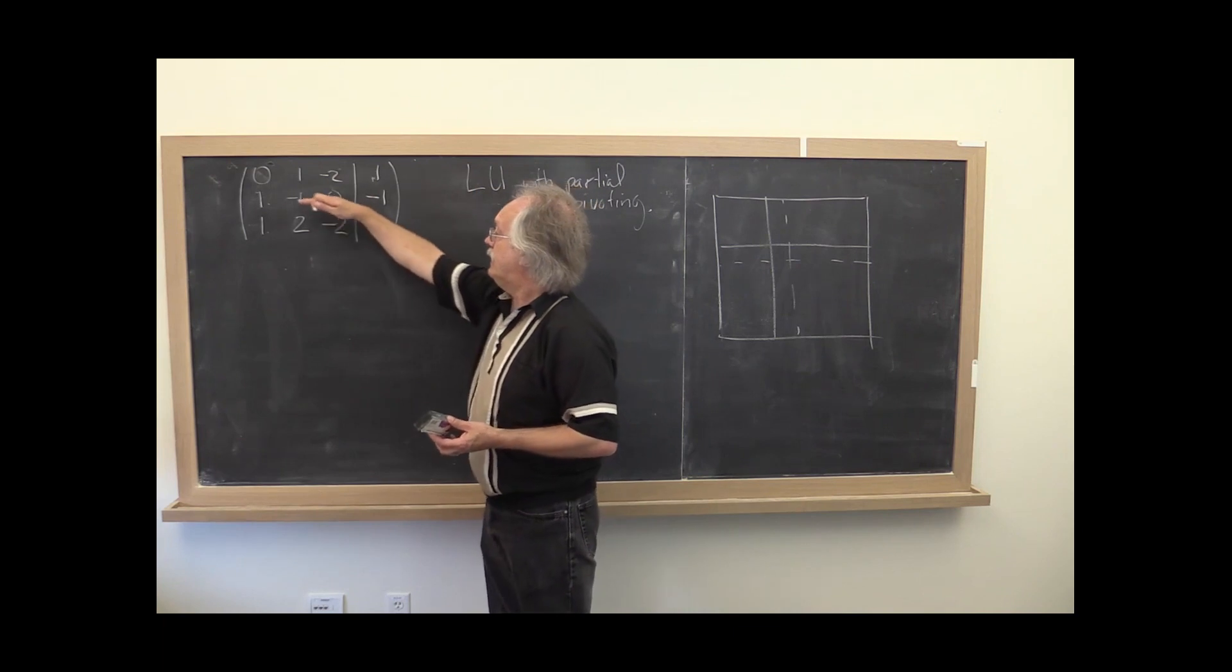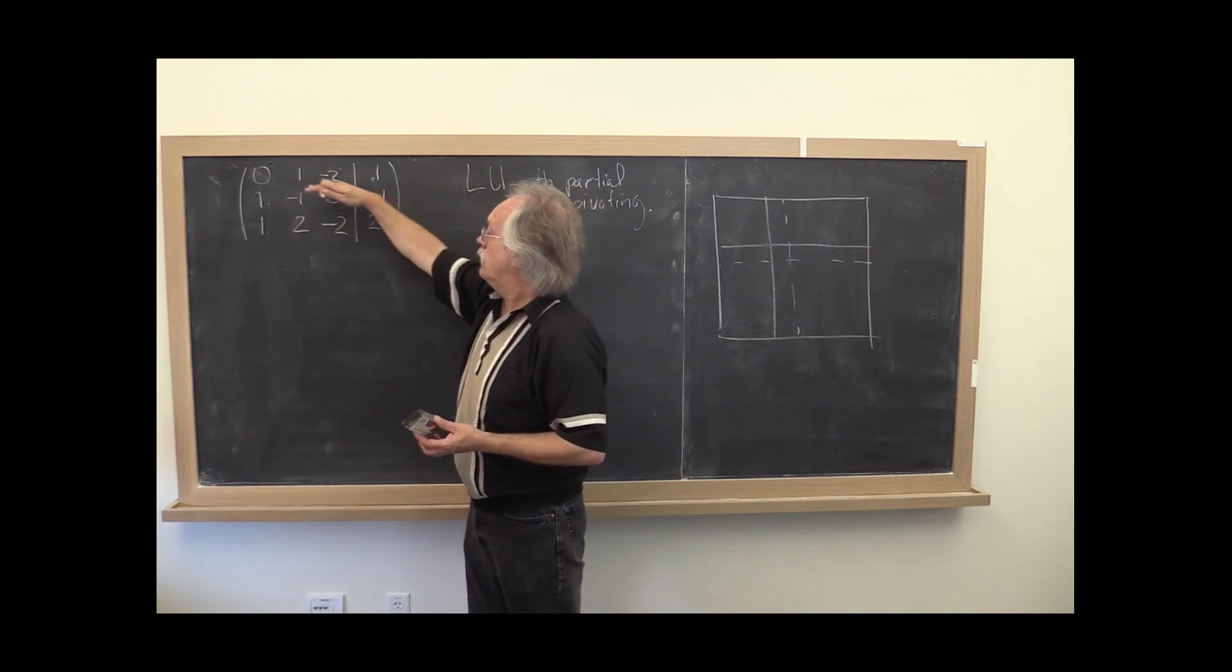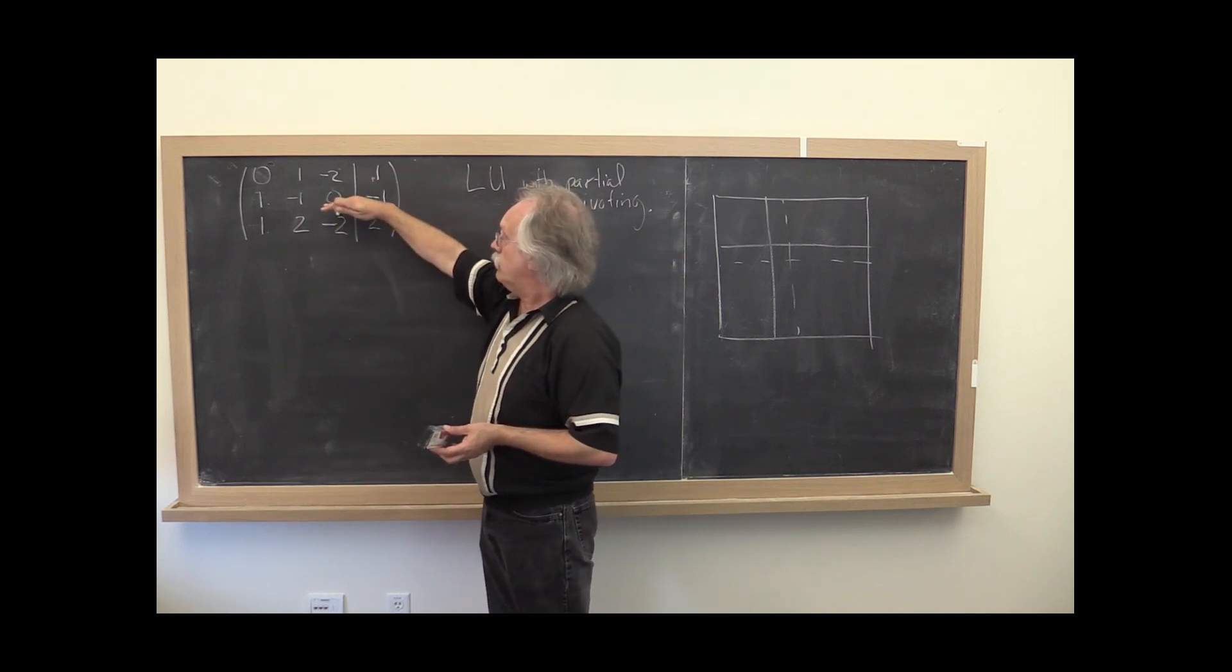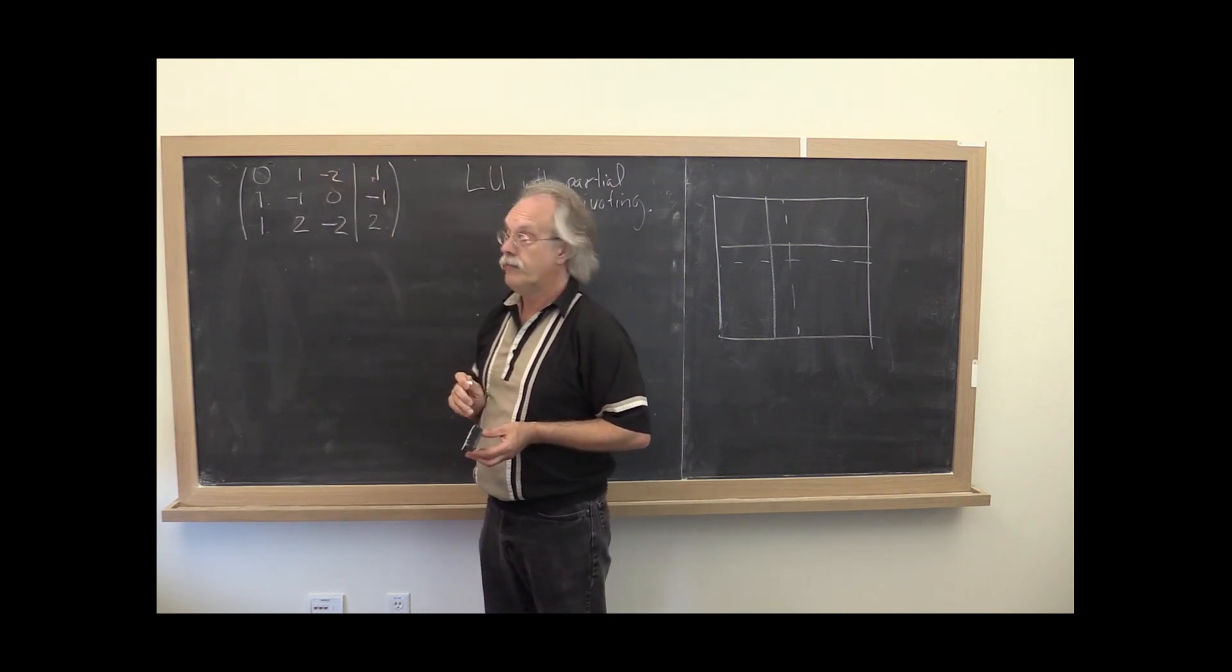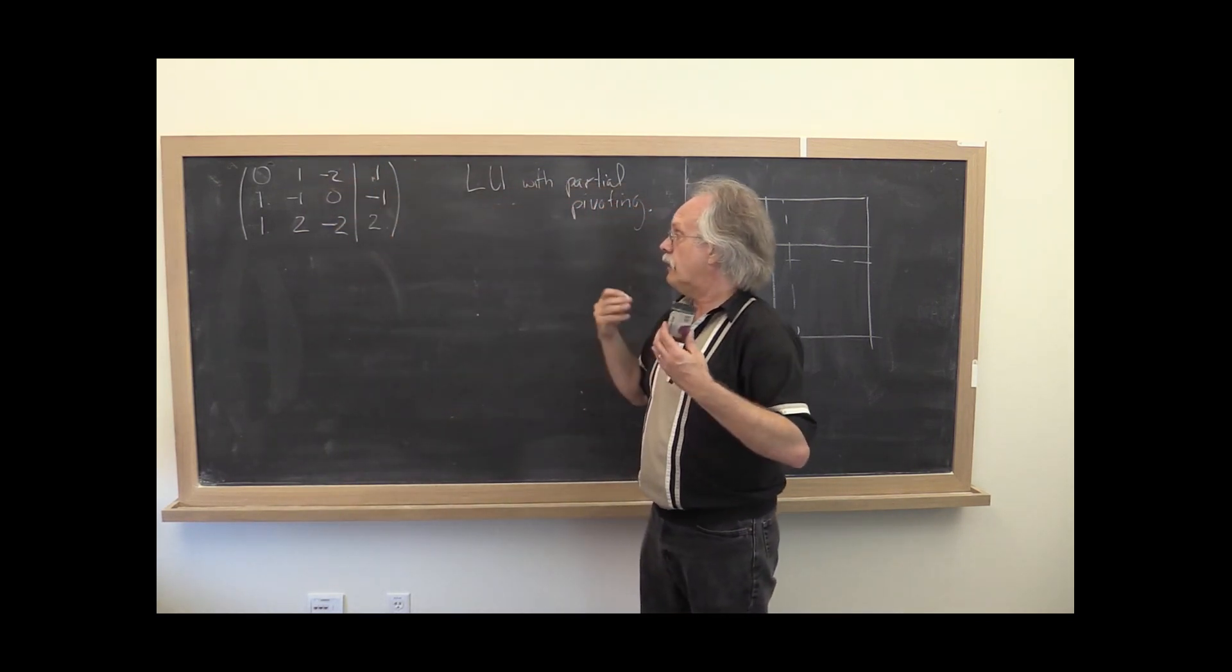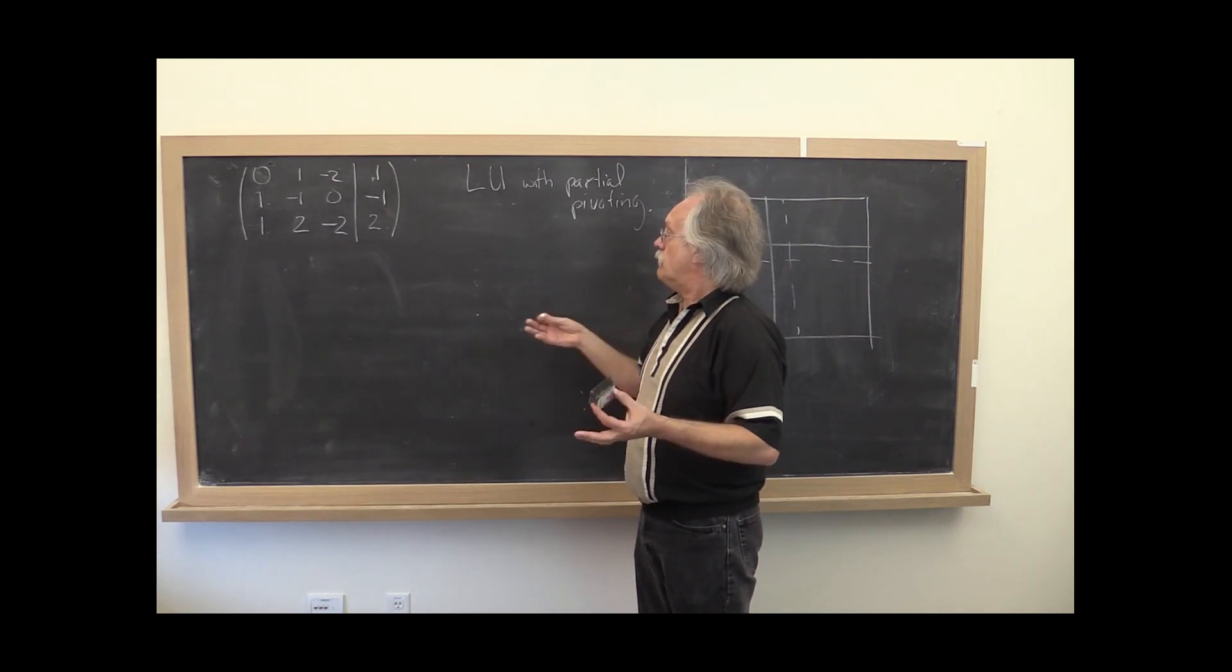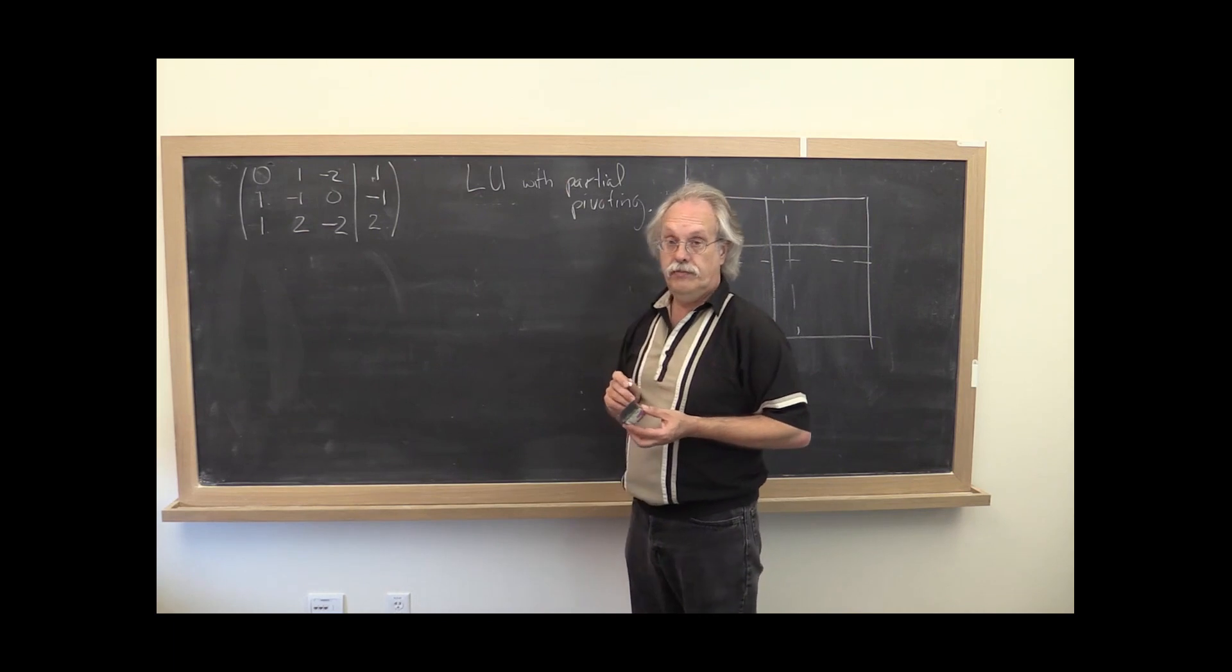The idea behind that is that each of these is a linear system. The order in which you write the linear systems doesn't matter, and therefore you can swap things around. That, if you then incorporate it into LU factorization, gives you an algorithm that's referred to as LU with partial pivoting.